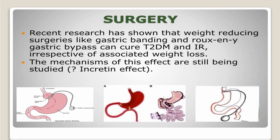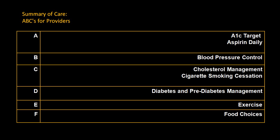For obesity, surgical intervention is available — specifically Roux-en-Y gastric bypass surgery and gastric banding. Treatment can also be remembered as ABCDEF: A for diabetic control and aspirin, B for blood pressure control, C for cholesterol and smoking cessation, D for diabetes and pre-diabetic management, E for exercise, and F for food choices.